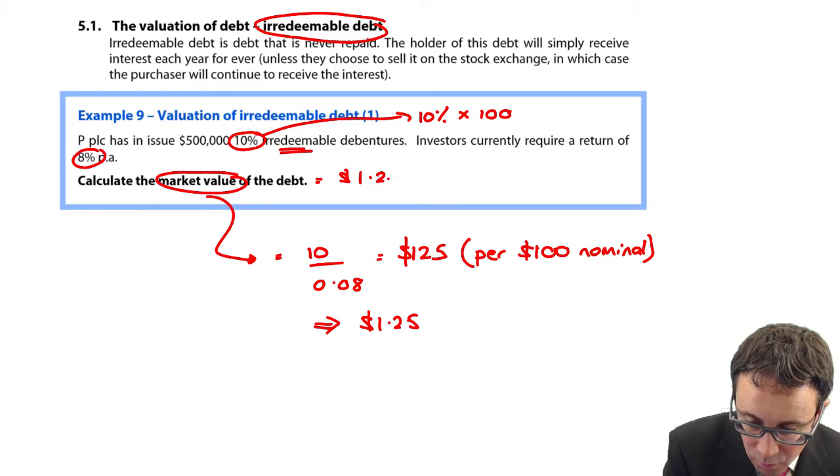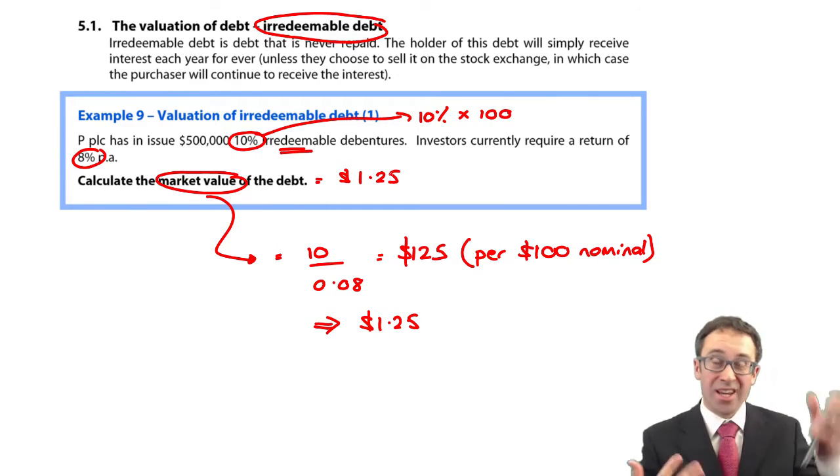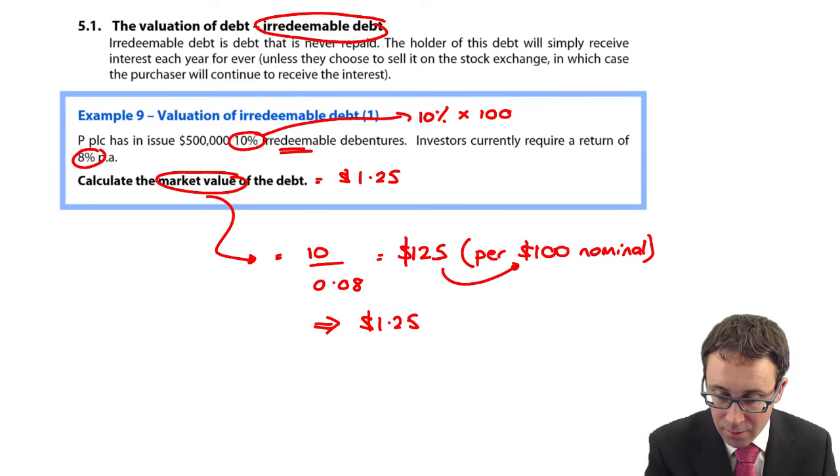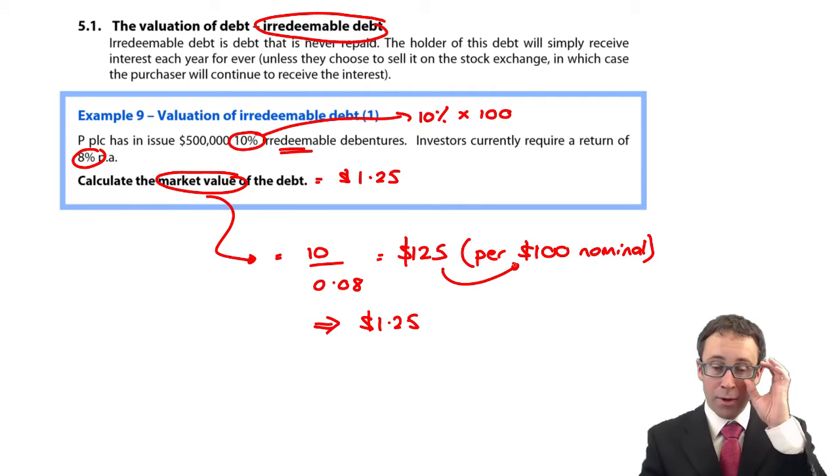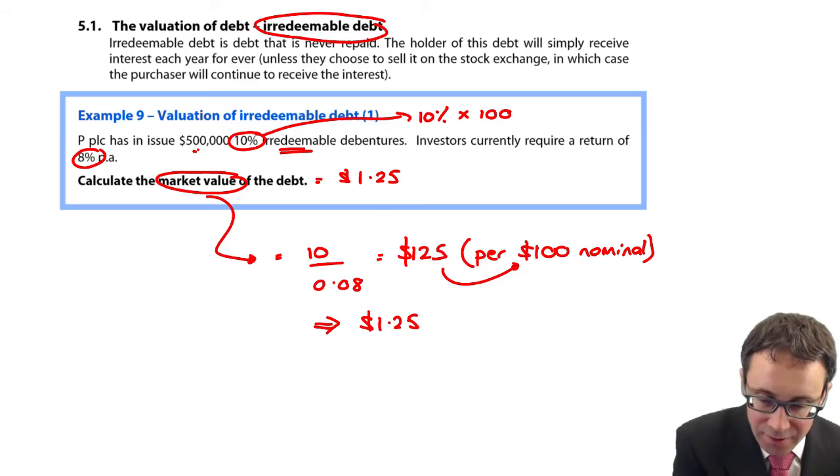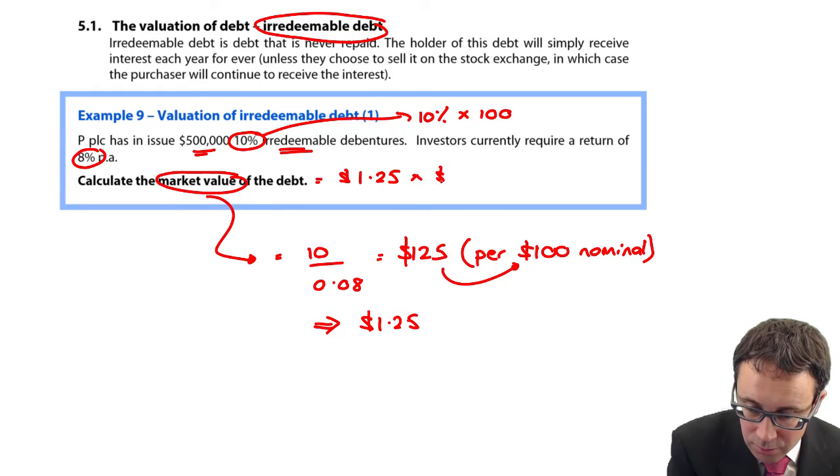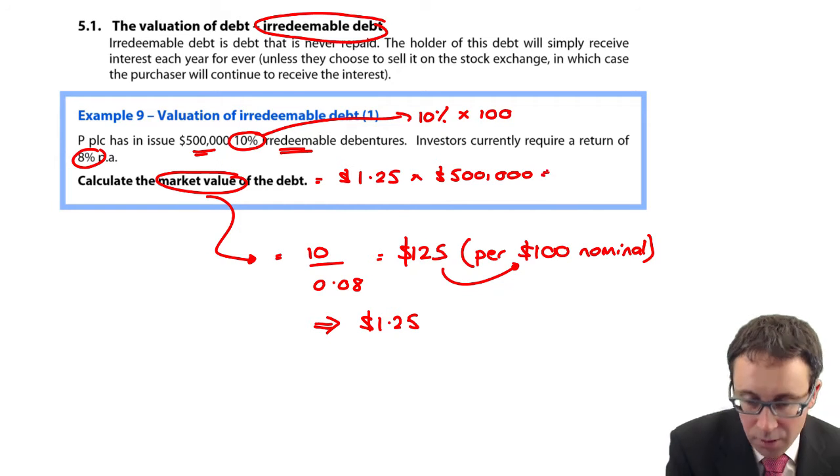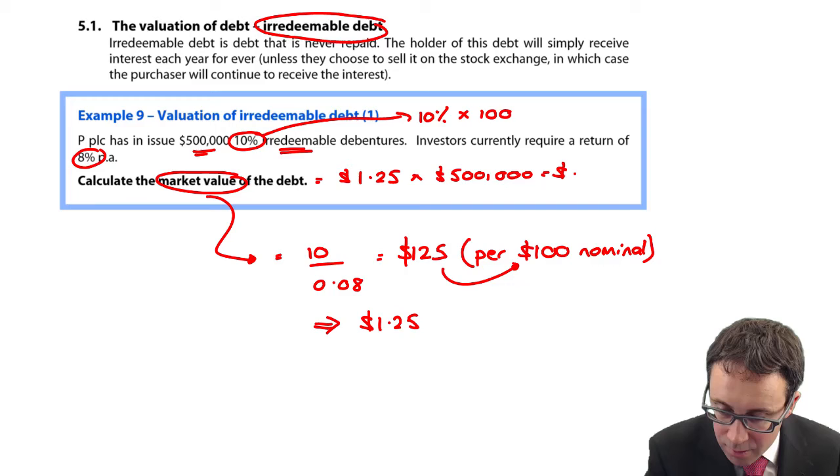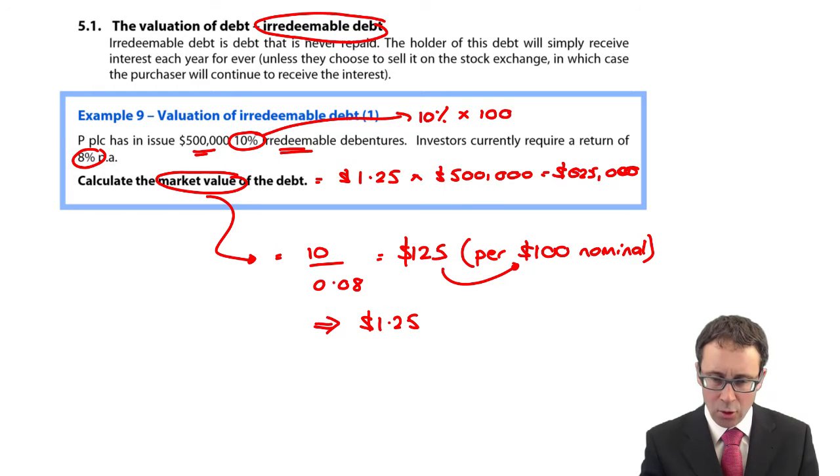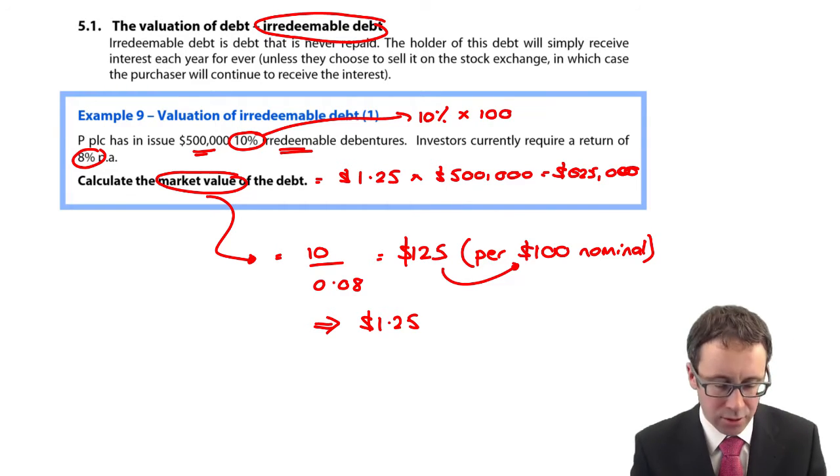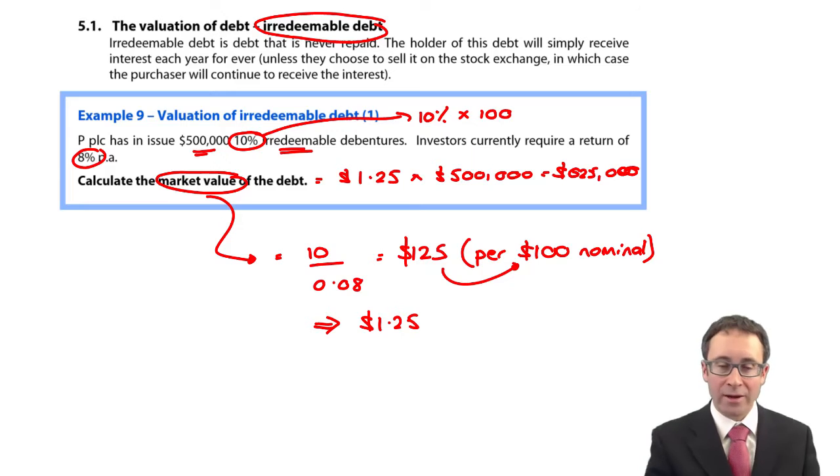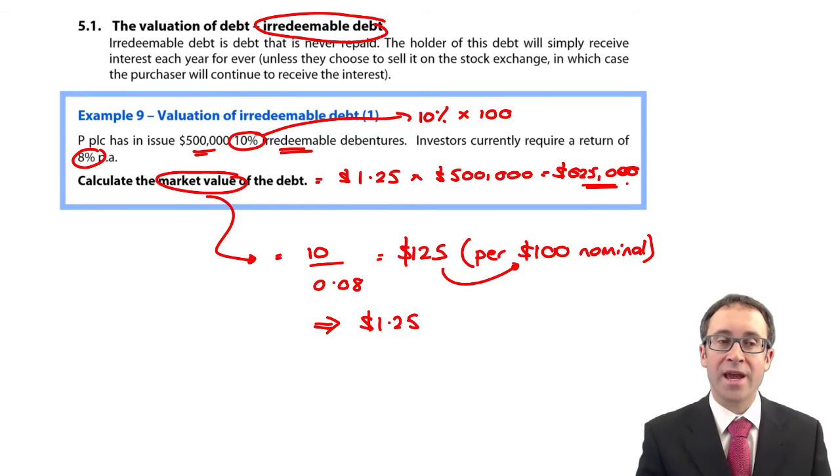If we're trying to work out the market value in total of the debt, it's $1.25 times $500,000, giving me $625,000. Excellent, there you have it.